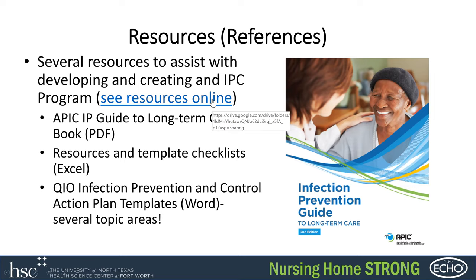The first resource is the APIC IP Guide to Long-Term Care. Usually this book costs about a hundred dollars, but APIC provided it free of charge early in the pandemic, so I'm providing it to you. It is a really great resource that covers a lot of detail on how to implement infection prevention in long-term care.